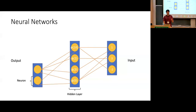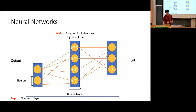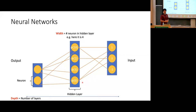Two notions of size are very important in discussing neural networks. One is the width of the network, which is the number of neurons in the hidden layer — here it is four. The second notion is depth, which is the number of layers — here you can count three layers, including one hidden layer. These are roughly similar ways of counting. Hopefully this gives a very quick intuitive picture of what a neural network looks like, obviously inspired by animal neural systems.